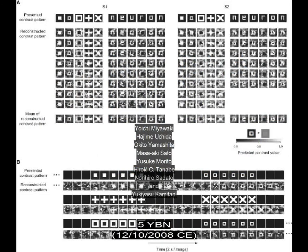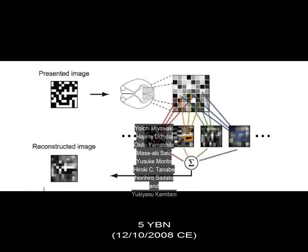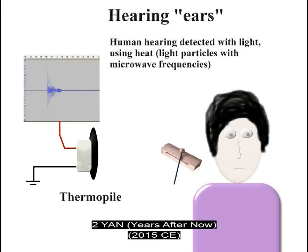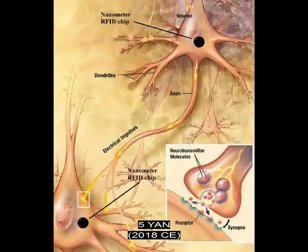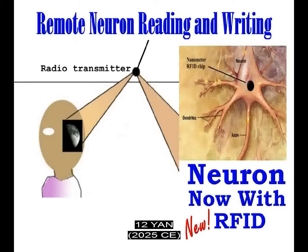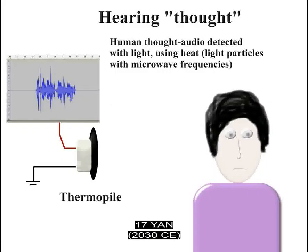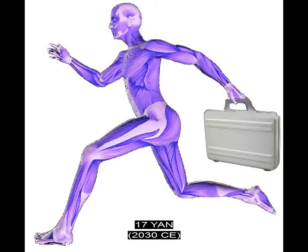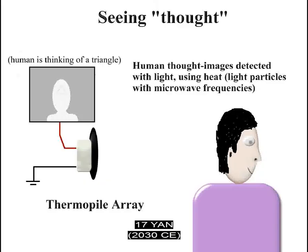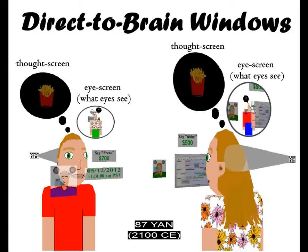Remote neuron reading — image of what the eyes are seeing captured remotely. Sound a brain hears recorded remotely. Radio device functions as cell organelle. Remote neuron writing using microscopic devices and neurons. Microscopic camera. Microscopic flying camera. Thought audio recorded and played out loud. Humans start to communicate by thought image and thought sound only. Artificial muscle bipedal robot. Thought images seen — humans walk with robot servants. Most humans communicate only by images and sounds of thought.